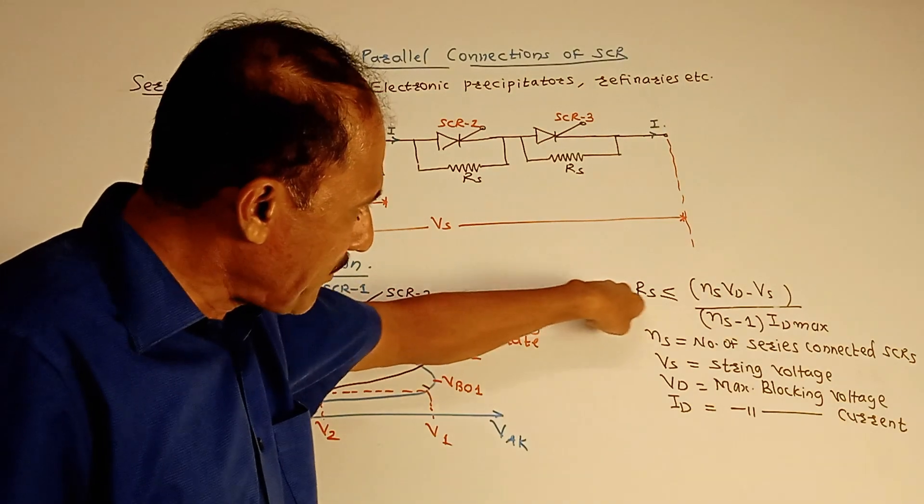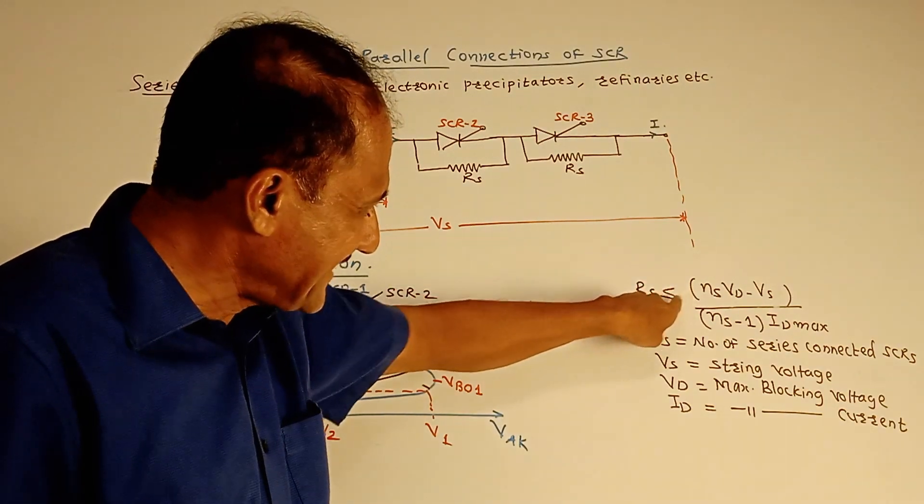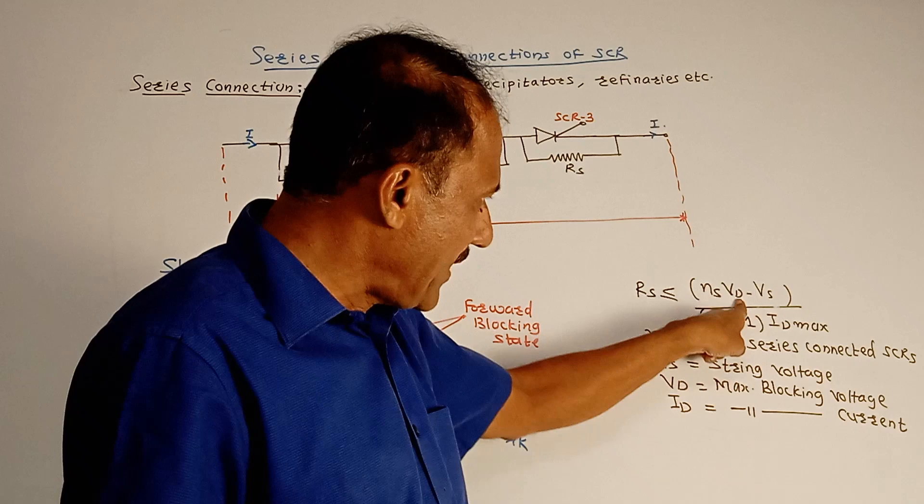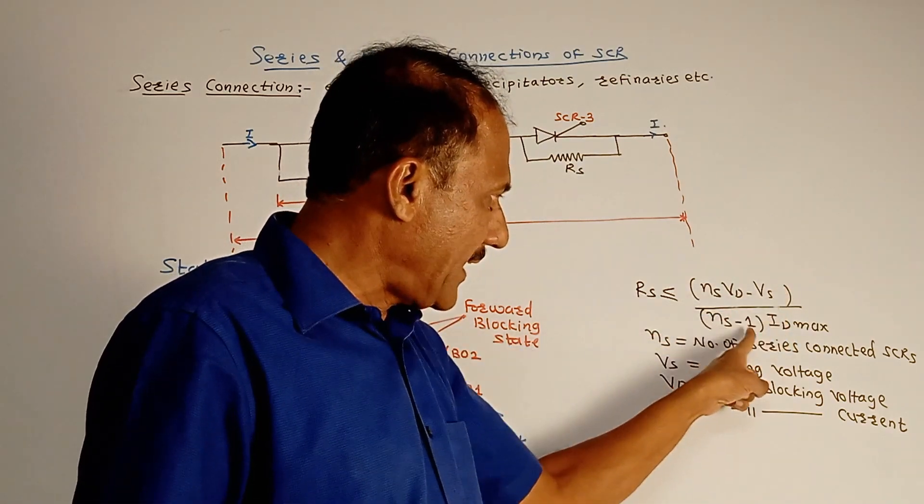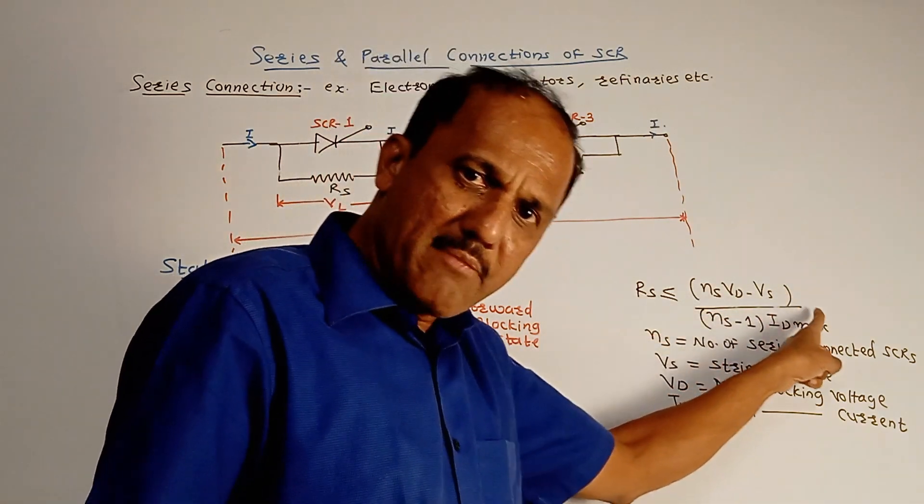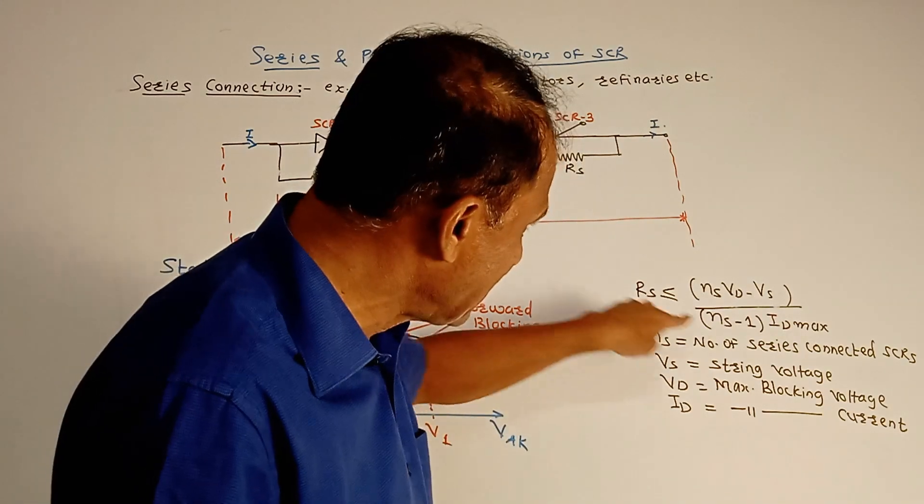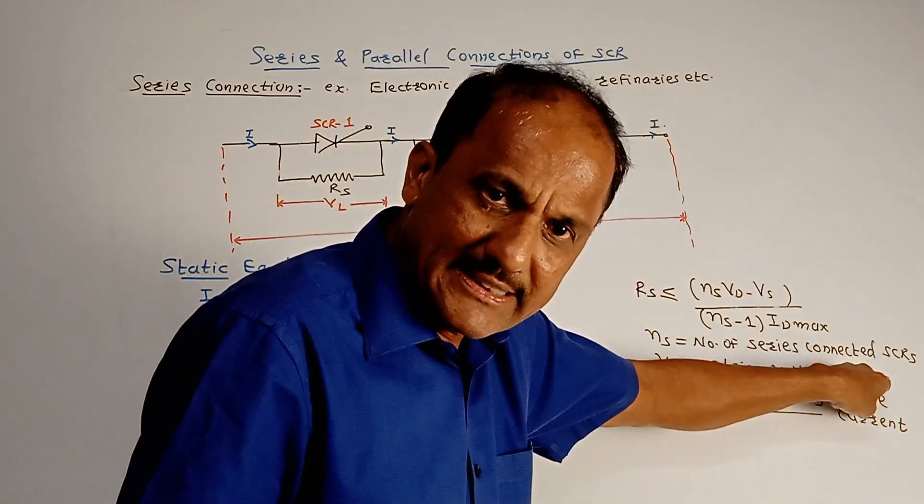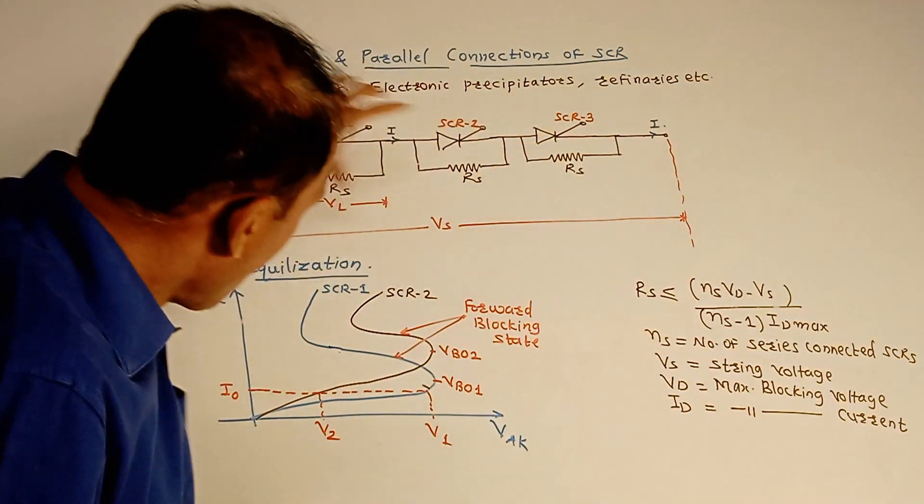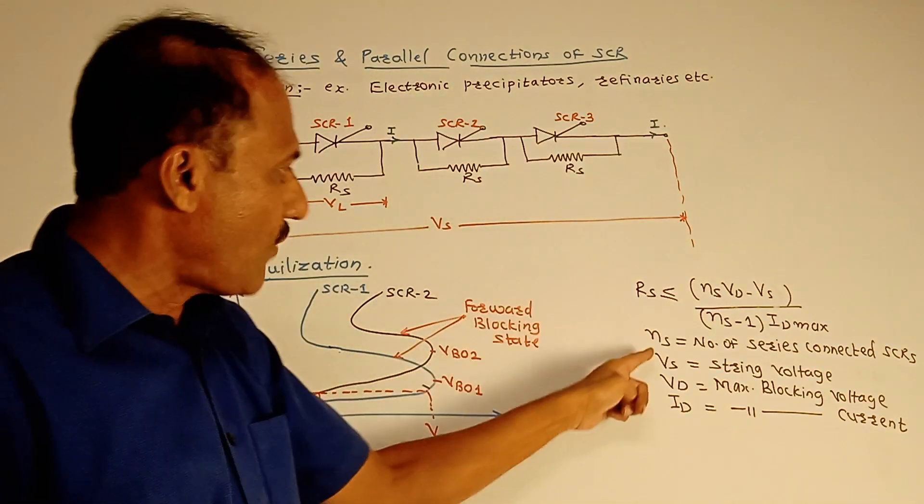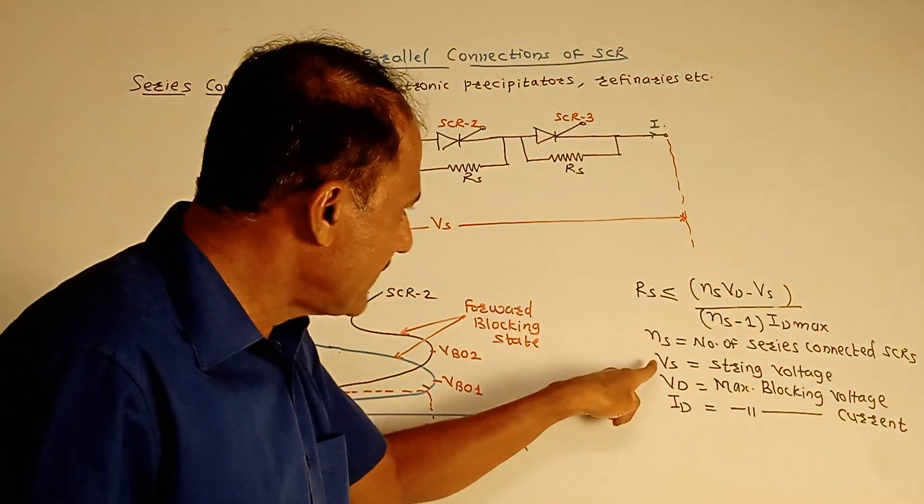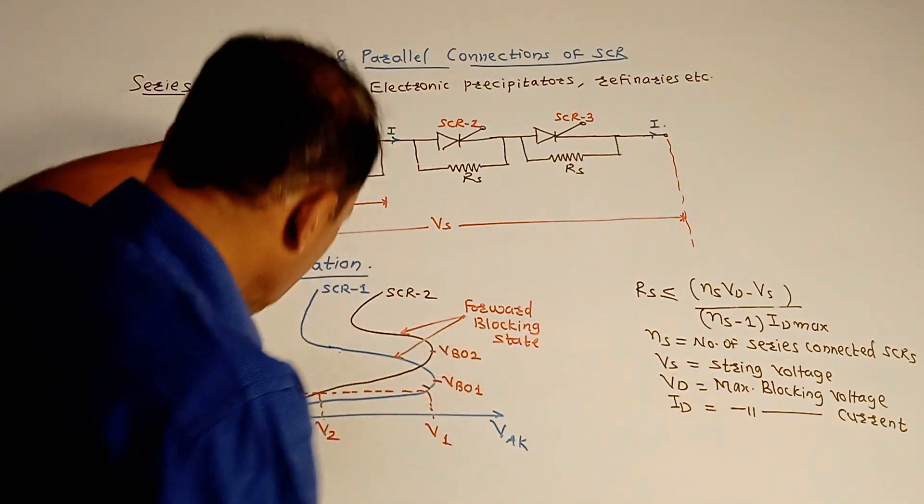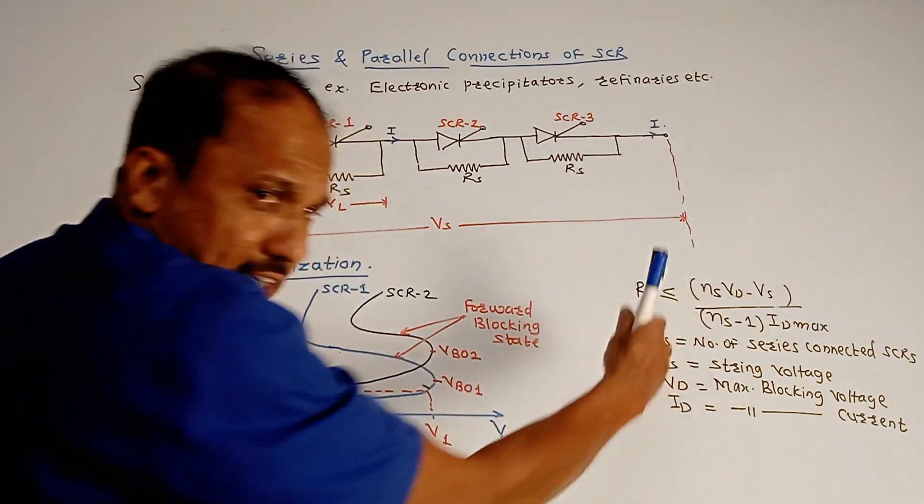Now this value of resistance Rs, which is used to obtain the static equalization, is approximately given as: it is less than or equals to Ns times Vd minus Vs upon Ns minus 1 into Id max, where Ns means number of series connected SCRs. Just say in this diagram, the value of Ns will be three. Then Vs is the string voltage, just now I explained, total series combination.